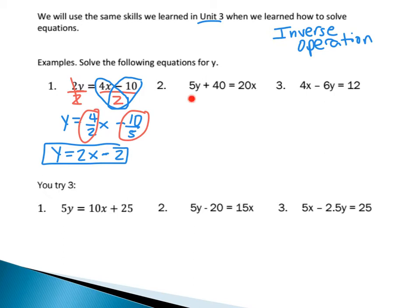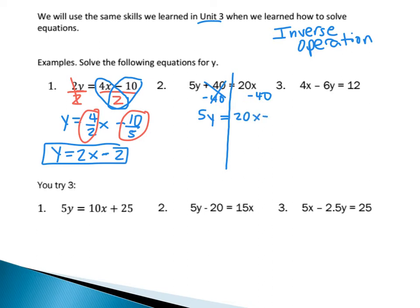Next example: I have 5y plus 40 equals 20x. I'm going to try and get y by itself. Notice I have 5y and the plus 40, so I need to get rid of both. Starting from the bottom — addition and subtraction first. The inverse of plus 40 is minus 40. So I subtract 40 from each side. That cancels on this side, leaving just 5y. The other side equals 20x minus 40. I can't combine those because they're not like terms — 20x has an x and 40 does not. So I leave it as 20x minus 40.